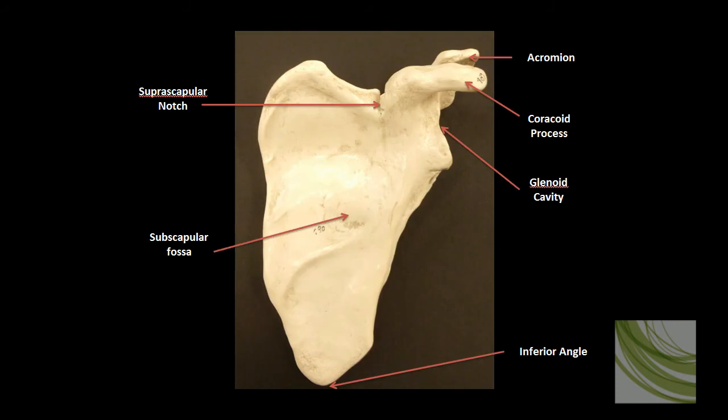This is the anterior aspect of the left scapula. Here we can see the coracoid process much more clearly. The coracoid process is the point of attachment of the pectoralis minor muscles. Down here is the glenoid cavity, or glenoid fossa, which articulates with the head of the humerus.